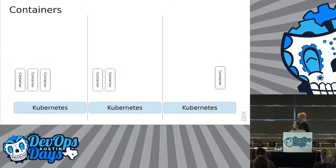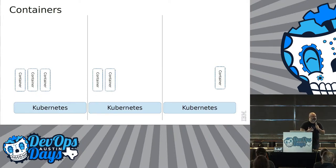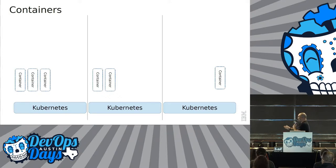First thing first, inside of Kubernetes, containers are the smallest unit. Everything revolves around a container and you can have multiple different layers of it. We will be seeing the next slide, which is right about now.